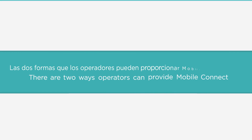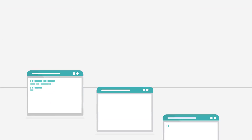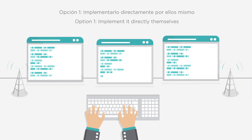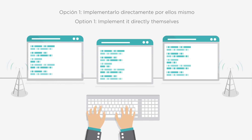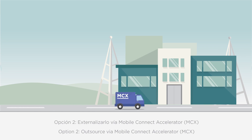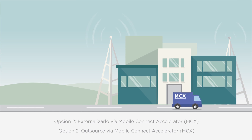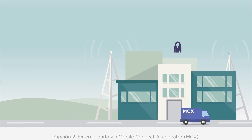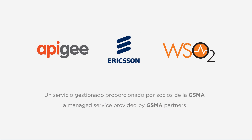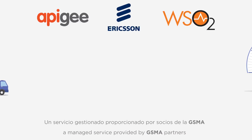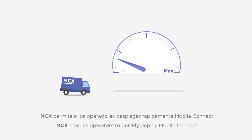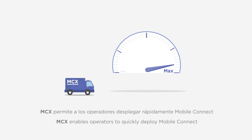Operators have two ways in which they can provide MobileConnect. They can choose to implement the service directly, or alternatively they can completely outsource using MobileConnect Accelerator, known as MCX, a managed service provided by a number of partners who the GSMA have teamed up with. MCX enables operators to deploy MobileConnect faster than their internal systems might allow.